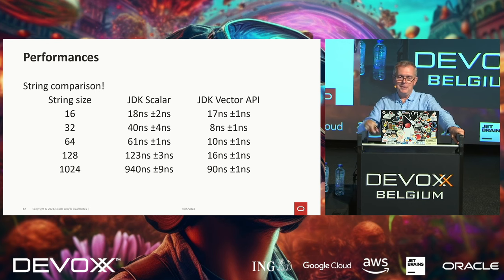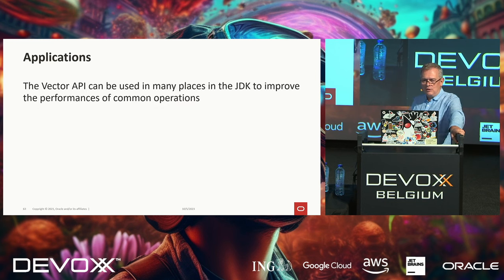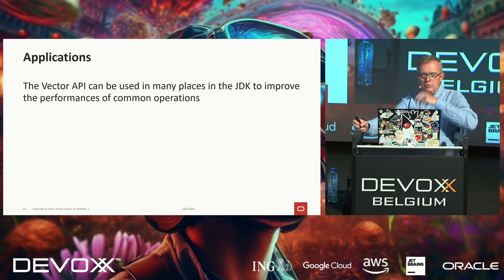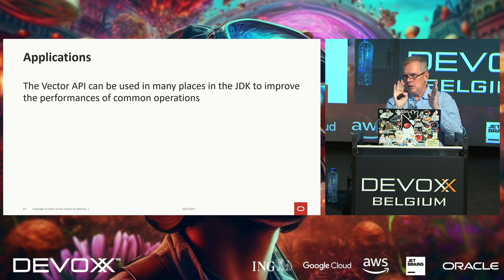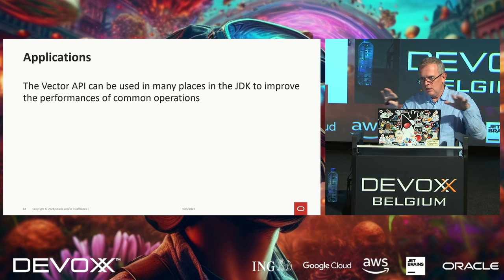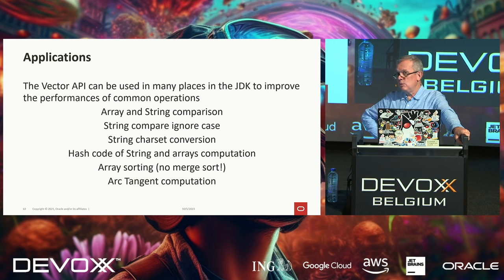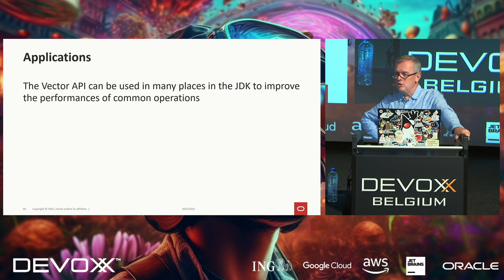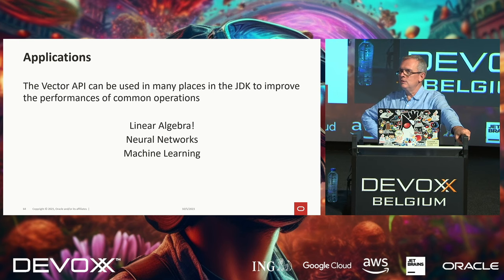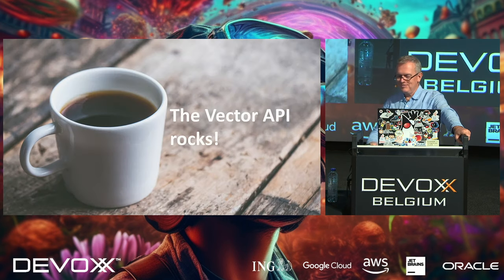To conclude: the Vector API is really about processing arrays of numbers — integer or floating point — not objects or strings of characters directly. Where can it be used? Real string comparison using char/byte arrays, hash code computation, array sorting without merge sort, arc tangent computation, parallel BigInteger operations, and many more numeric computations including square root. It can also be used for linear algebra more broadly, which means neural networks, machine learning, and artificial intelligence. Thank you for your attention.